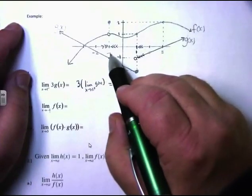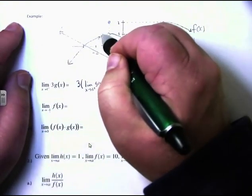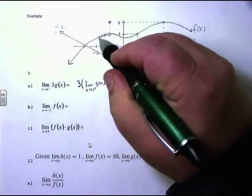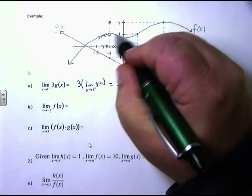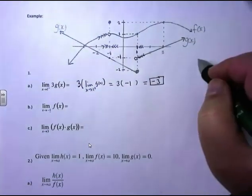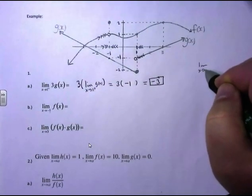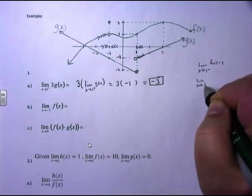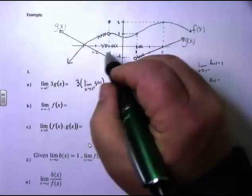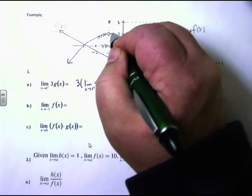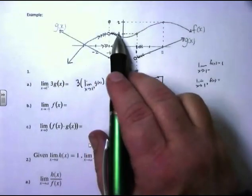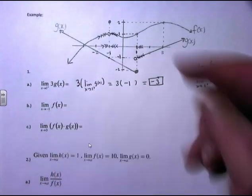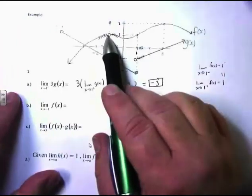If I take the limit as x approaches negative 1 from below of f of x, remember, we're not plugging in negative 1 — we're plugging in a number very close to negative 1. As we get very close to negative 1, the functional value is approaching positive 1. Now, the limit as x approaches negative 1 from the right of f of x is also approaching 1. Since the limit from below equals the limit from above, the limit as x approaches negative 1 of f of x equals 1.